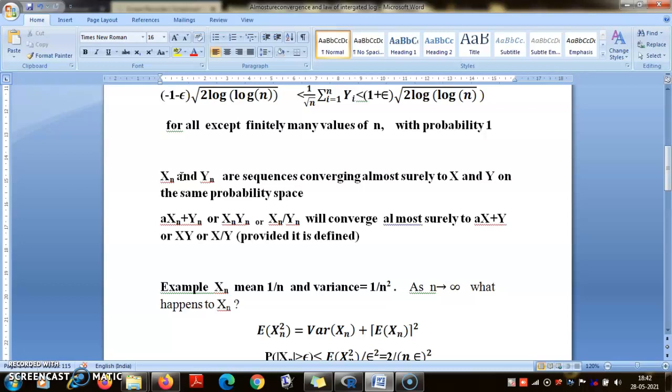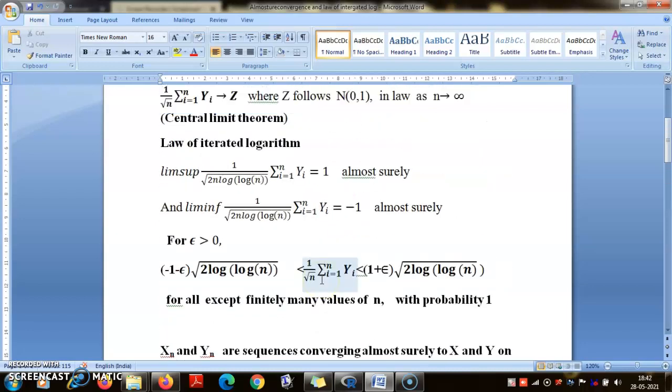I would ask you this slightly tricky question: suppose Xn is converging almost surely and Yn is converging in probability, then what will happen to aXn + Yn? Please think over it. The hint is that almost sure convergence implies convergence in probability. The rules hold whether the convergence is almost surely or in probability.